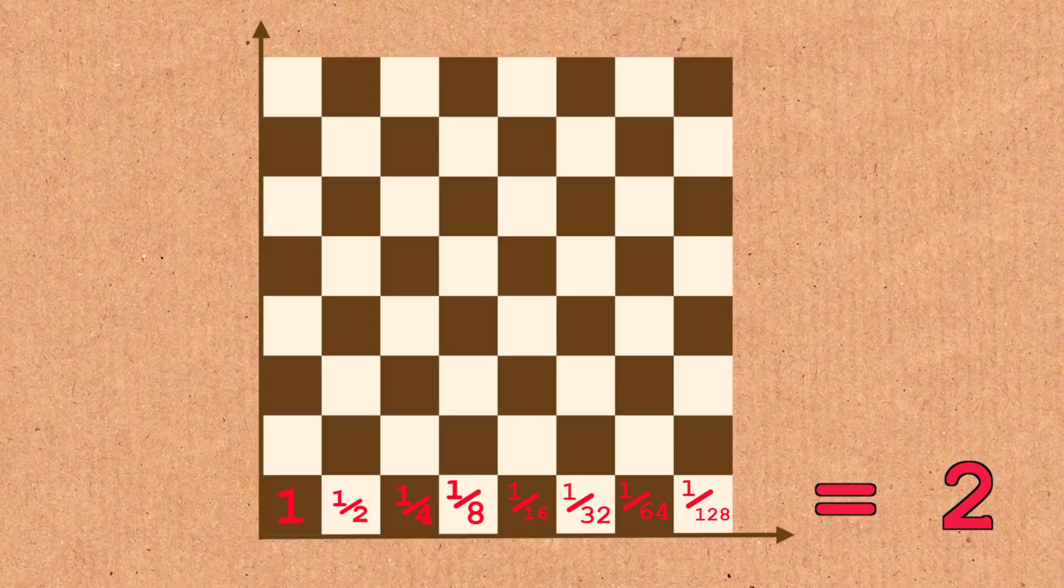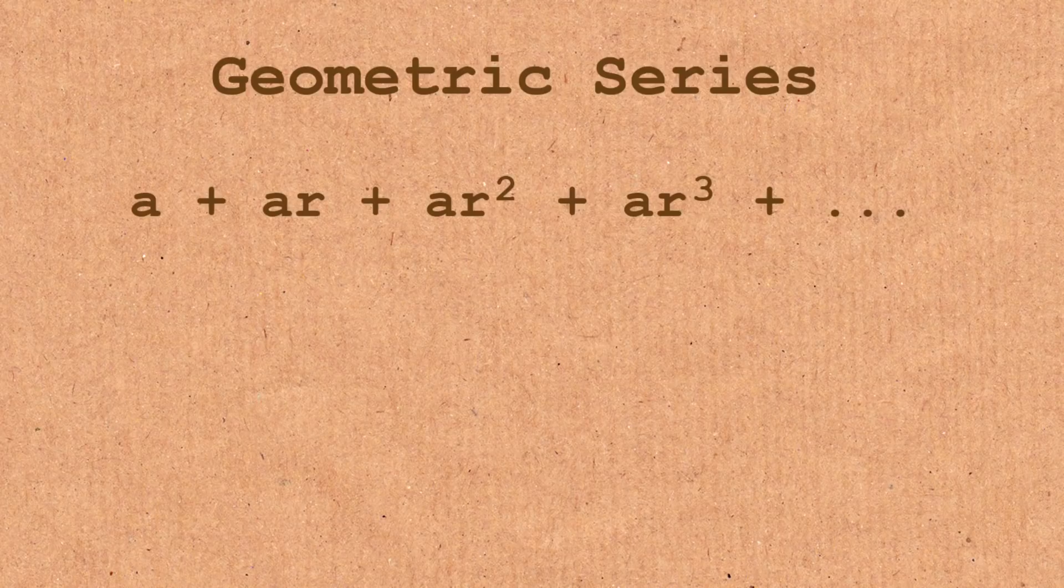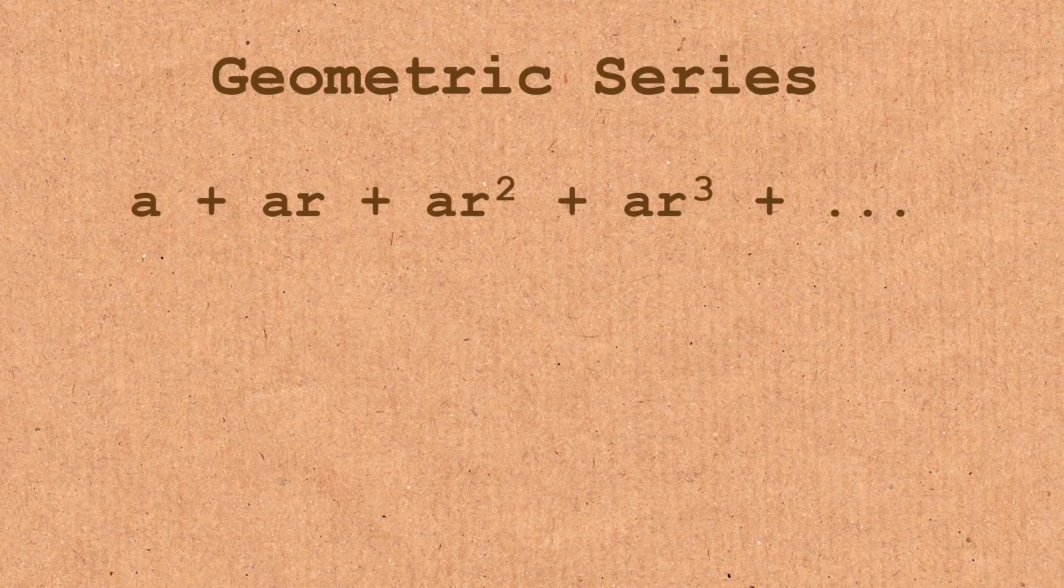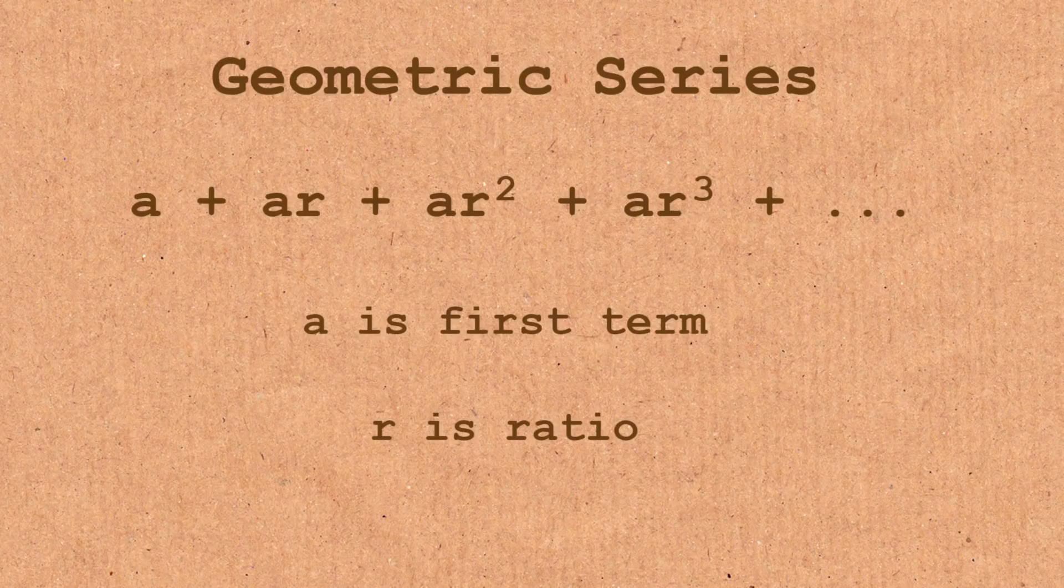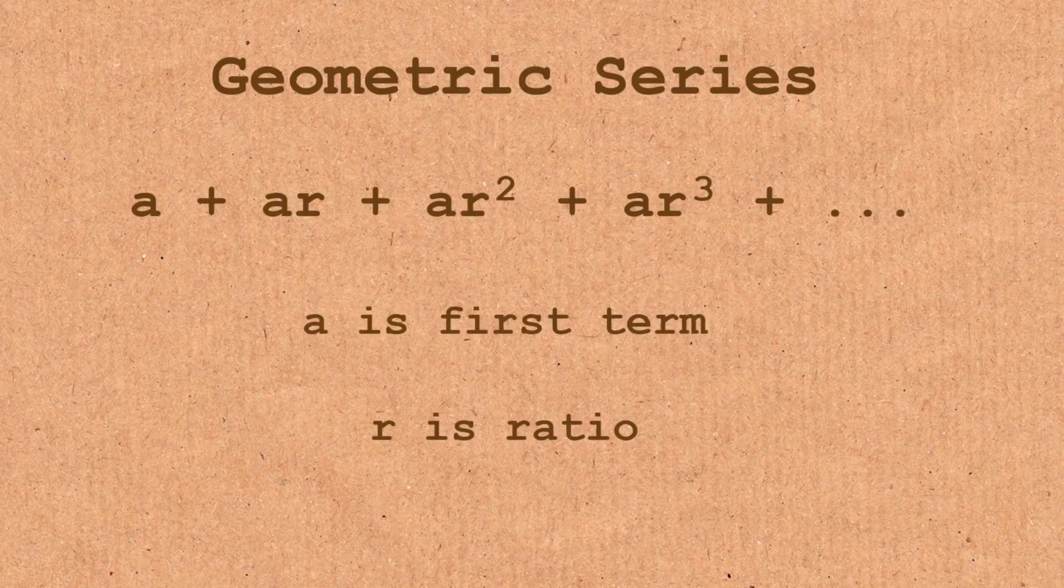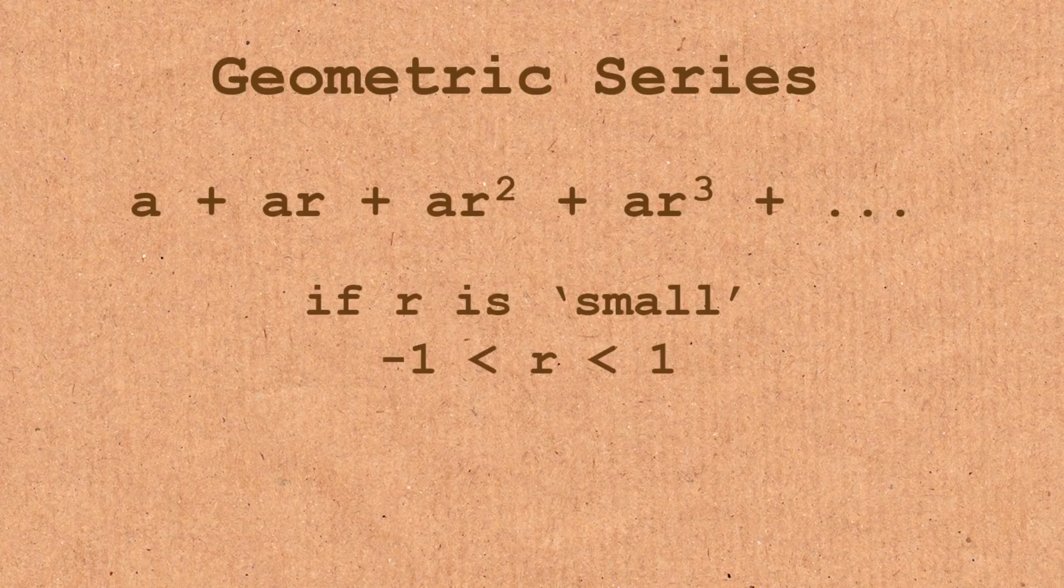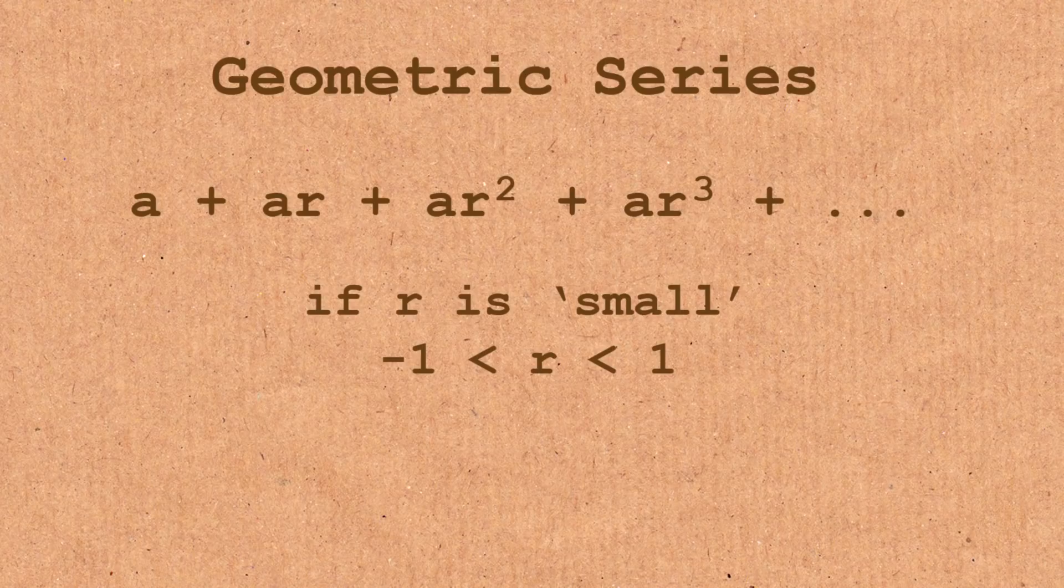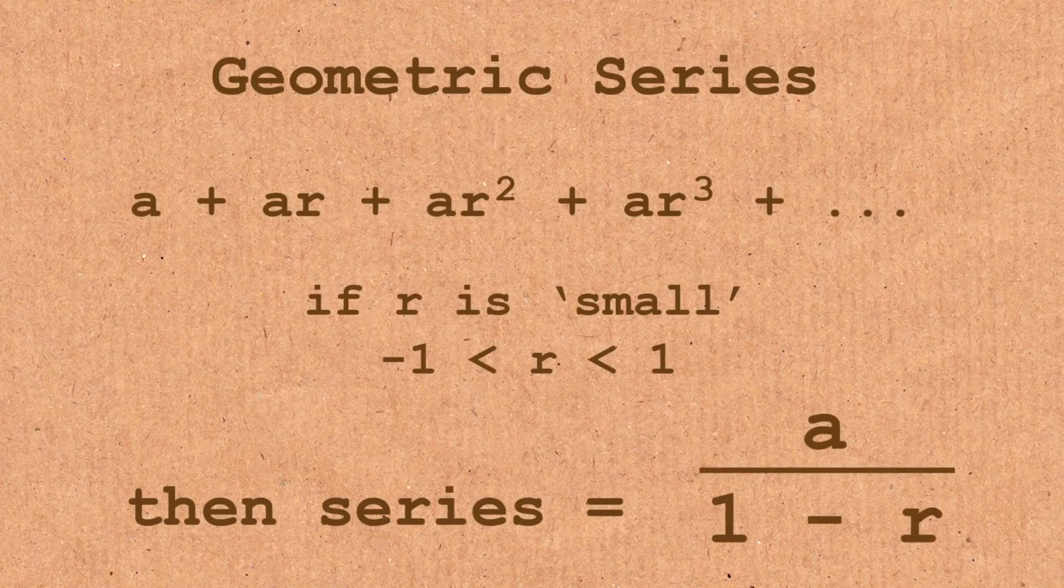So more generally, a geometric series is a sum of the form a plus ar plus ar squared, ar cubed and so on. Where we have a first term a and a ratio r. In other words, every next term is gotten by the previous when you multiply by r. Just like in our first row. And so there is a nifty formula in mathematics. If this ratio is small, how small? Between negative one and one, this sum, this geometric series actually adds up to something very simple. The first term divided by one minus the ratio. And this formula works for any ratio as long as it is between negative one and one.